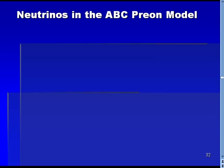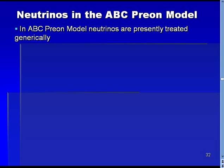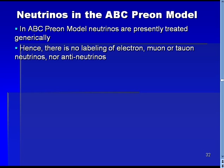At this point it is important to say some words about the role that neutrinos play in the ABC preon model. First, I wish to emphasize that the neutrino is treated generically in the ABC preon model. There is no labeling of neutrinos as being an electron neutrino, a muon neutrino, or a tau neutrino.